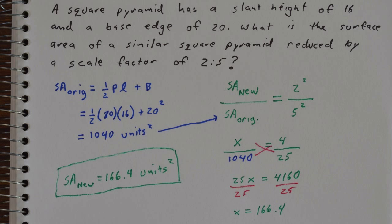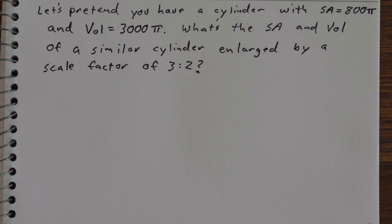Let's take a look at one more example. So let's say we have a cylinder with a surface area of 800 pi and a volume of 3000 pi cubic units. What would happen to the surface area and volume of a similar cylinder if we enlarged by a scale factor of 3 to 2?